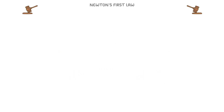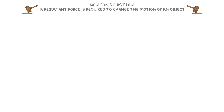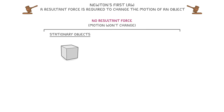Newton's first law basically says that a resultant force is required to change the motion of an object. Or in other words, if there isn't a resultant force, then the object's motion won't change. And this principle works for both stationary and moving objects.